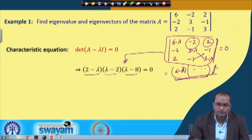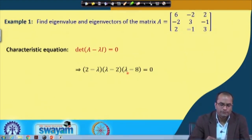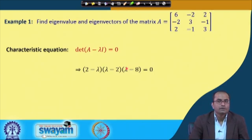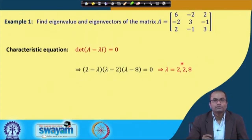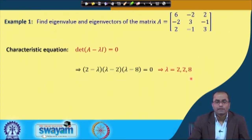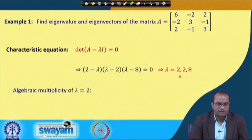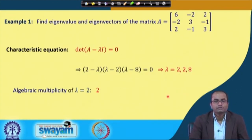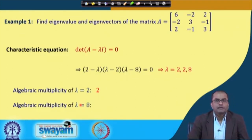After factorization of the characteristic polynomial, we get (2 - λ)(λ - 2)(λ - 8) = 0. So the eigenvalues are 2, 2, and 8. The eigenvalue 2 is repeated two times, giving it an algebraic multiplicity of 2, and the eigenvalue 8 has algebraic multiplicity of 1.